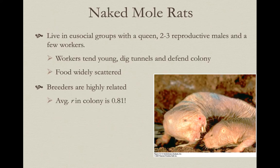Naked mole rats live in eusocial groups with a queen, two to three reproductive males, and several workers. They live in dry soils of Africa and spend almost their entire life underground, digging burrows to find tubers that are widely scattered in this environment. It takes a long time to dig these tunnels and finding food is difficult, so they all have to cooperate to survive.